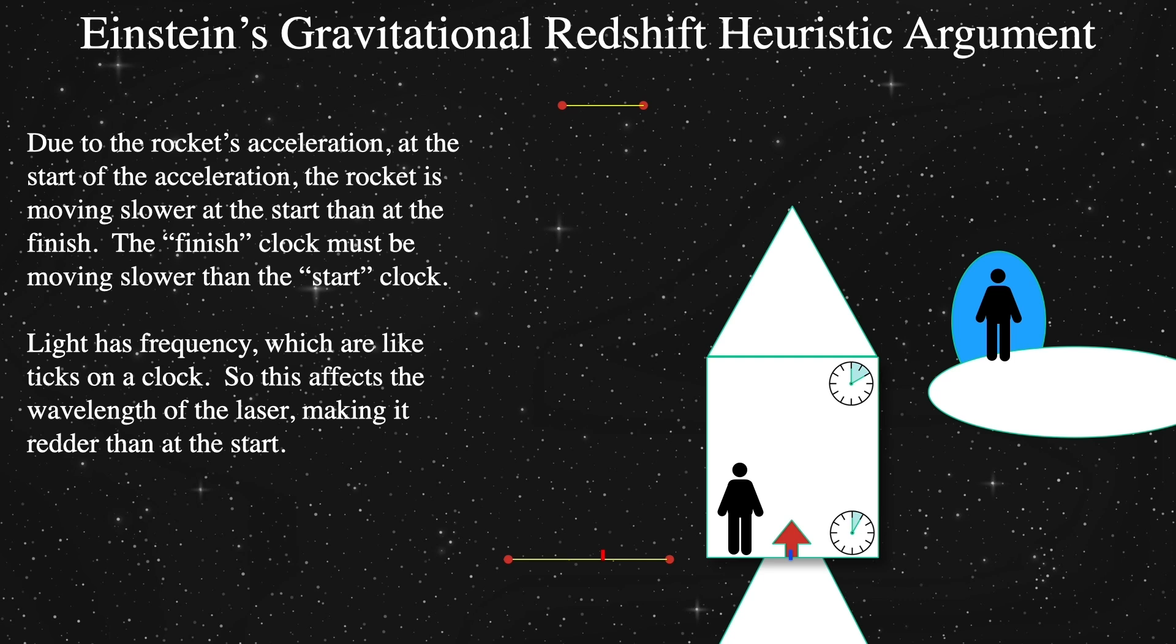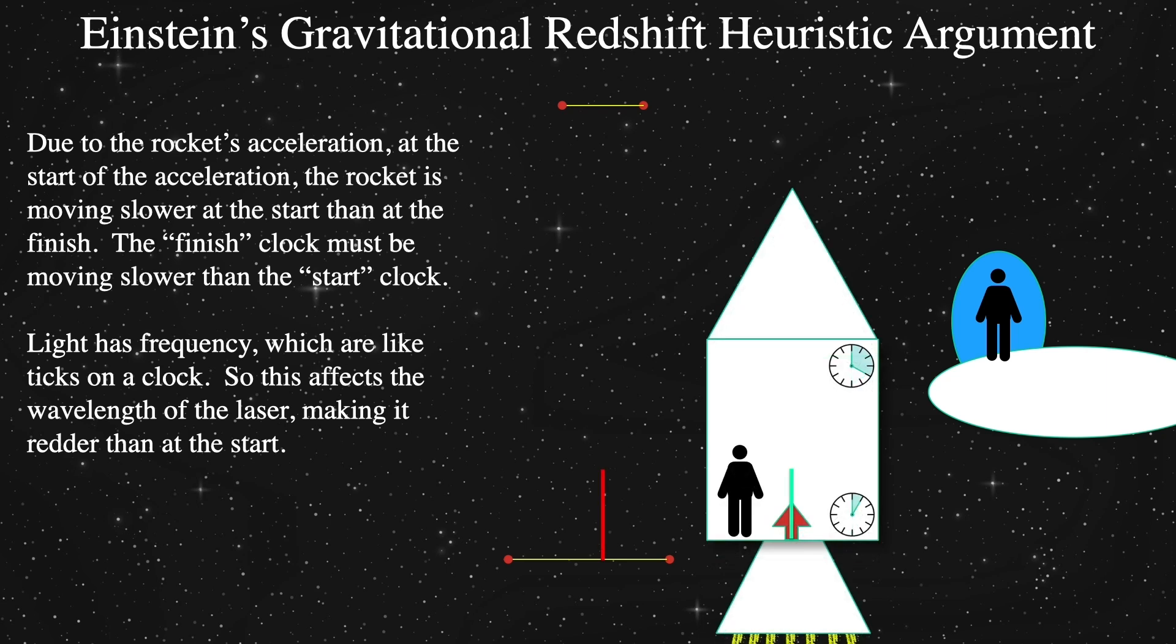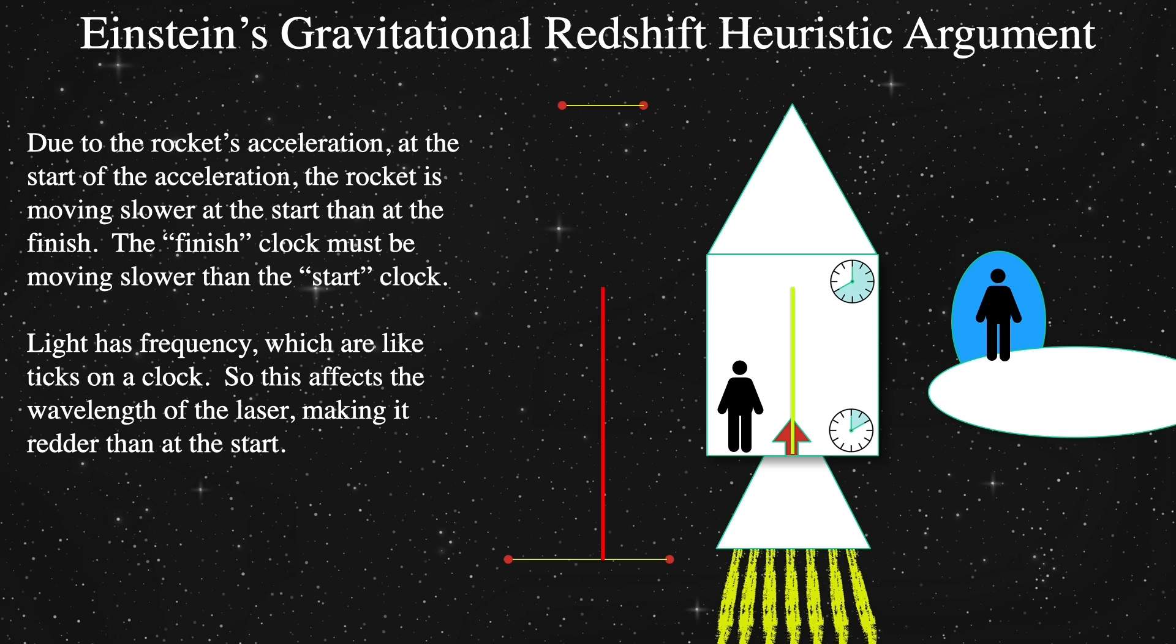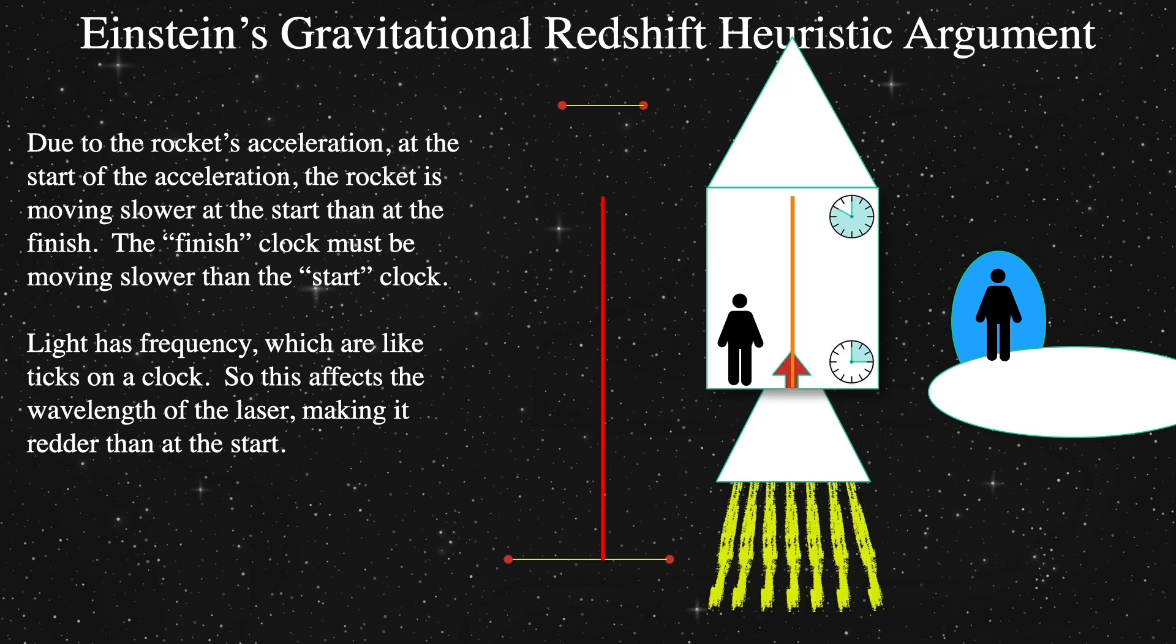And as the rocket accelerates, the top recedes away from the approaching laser, eventually crossing the distance from bottom to top.